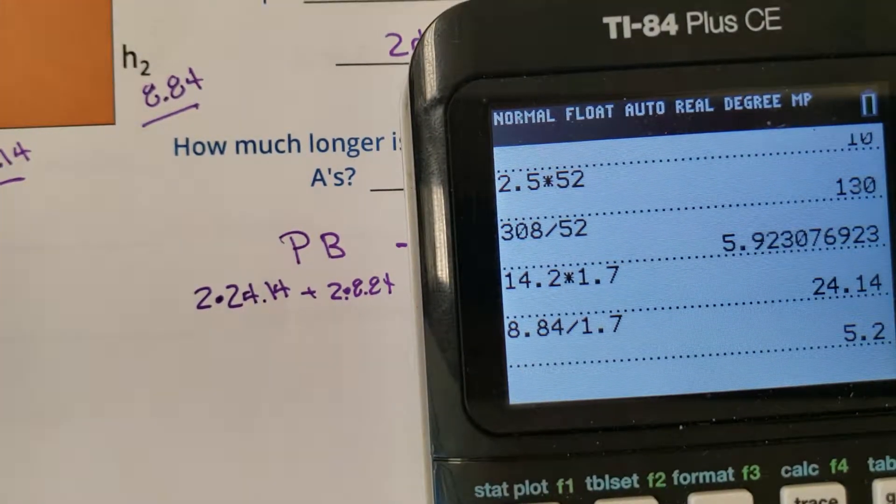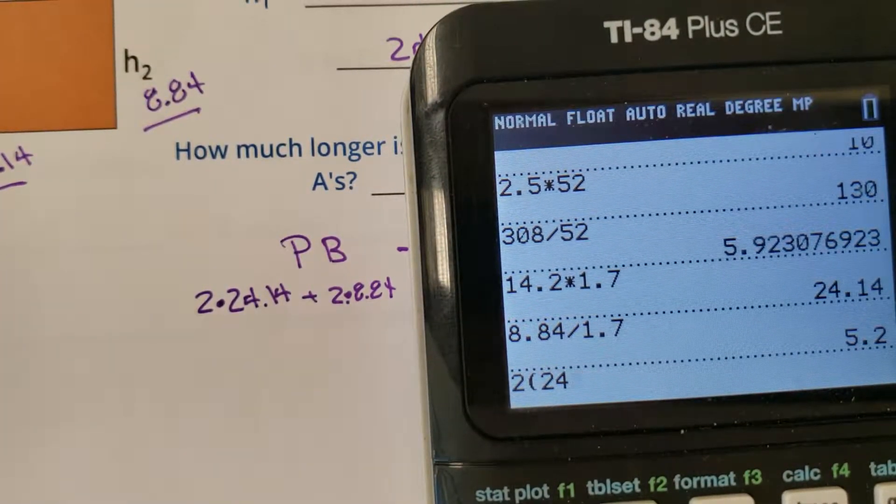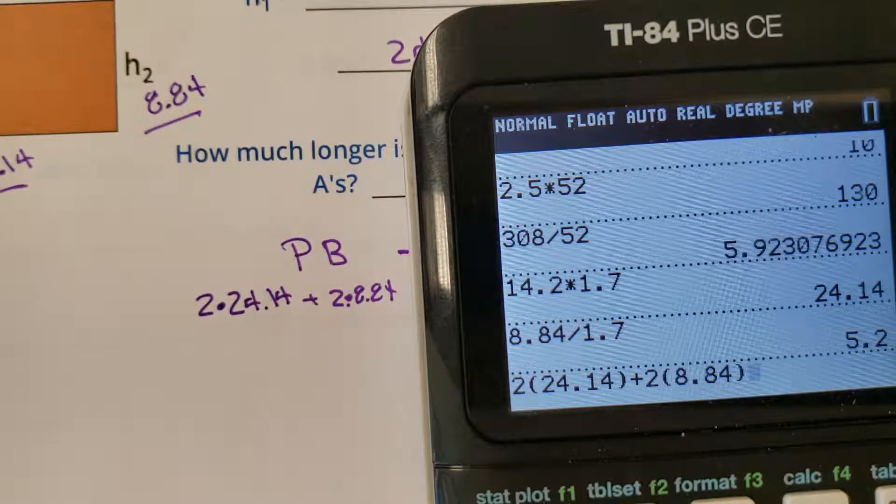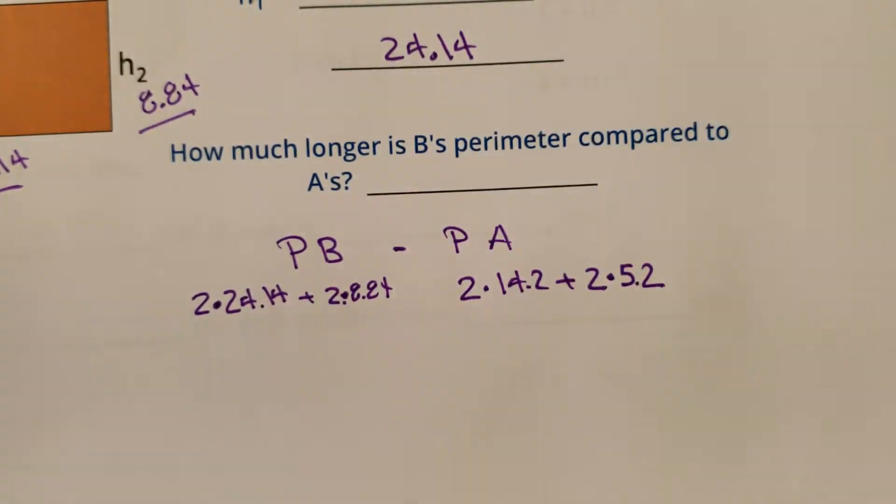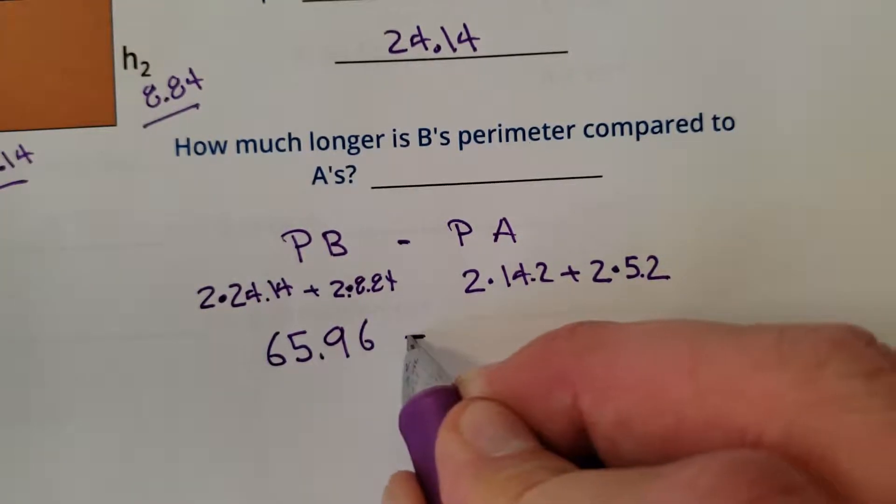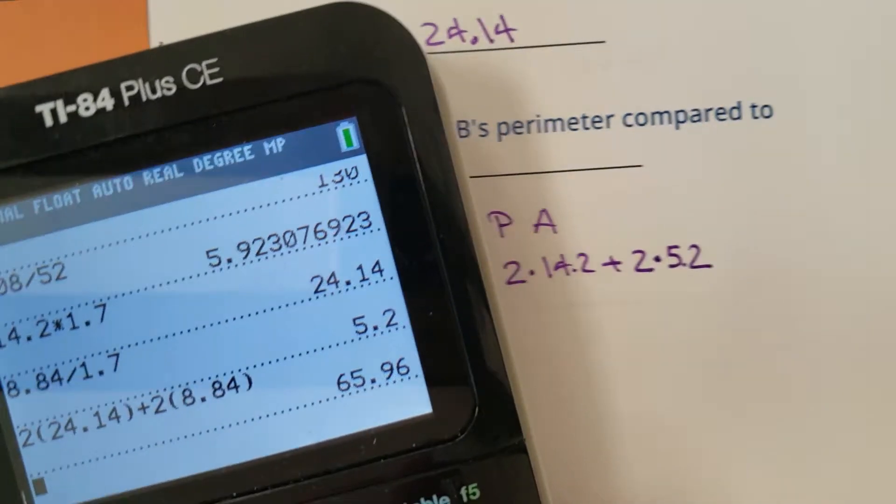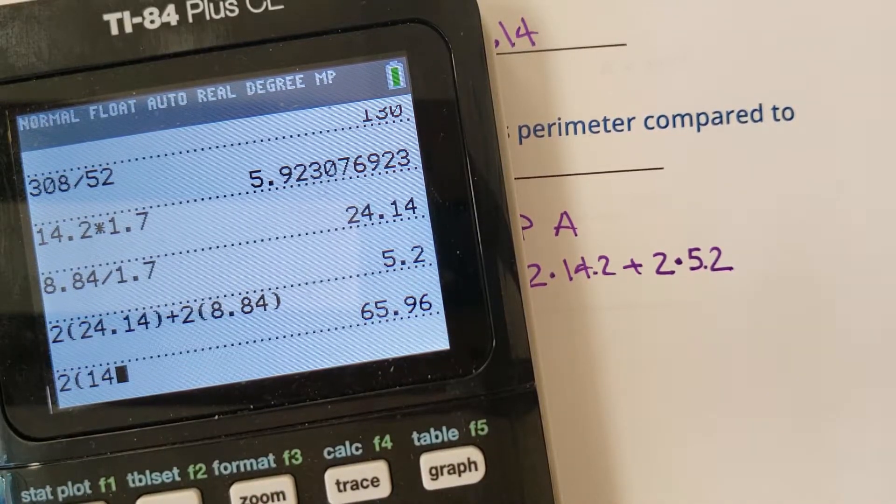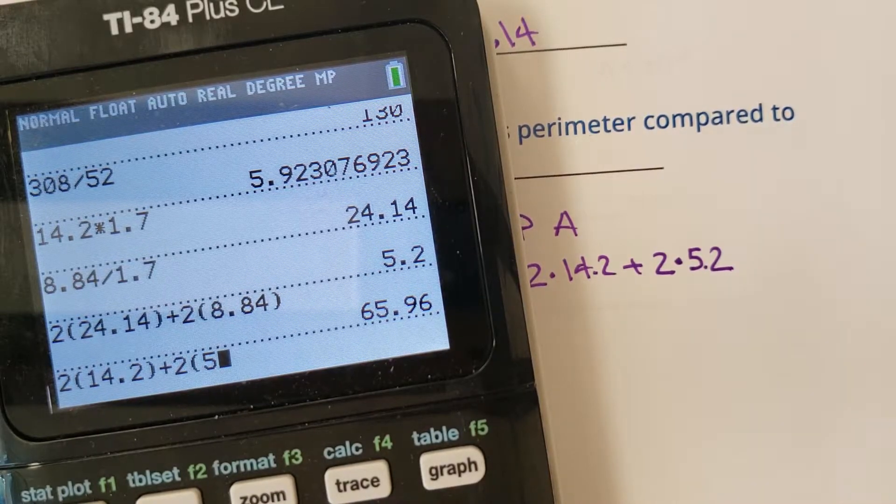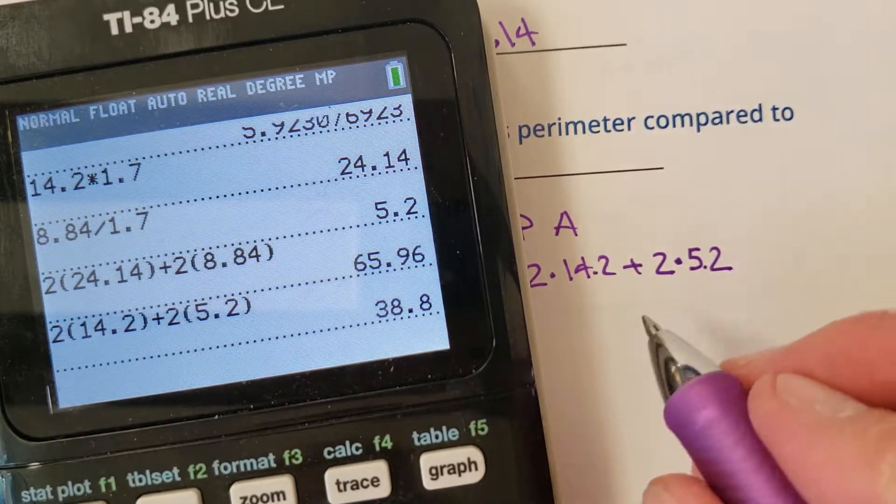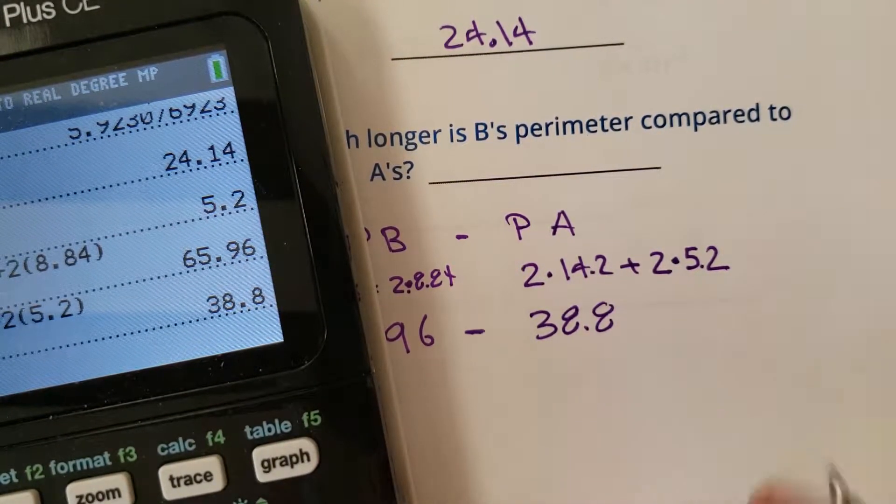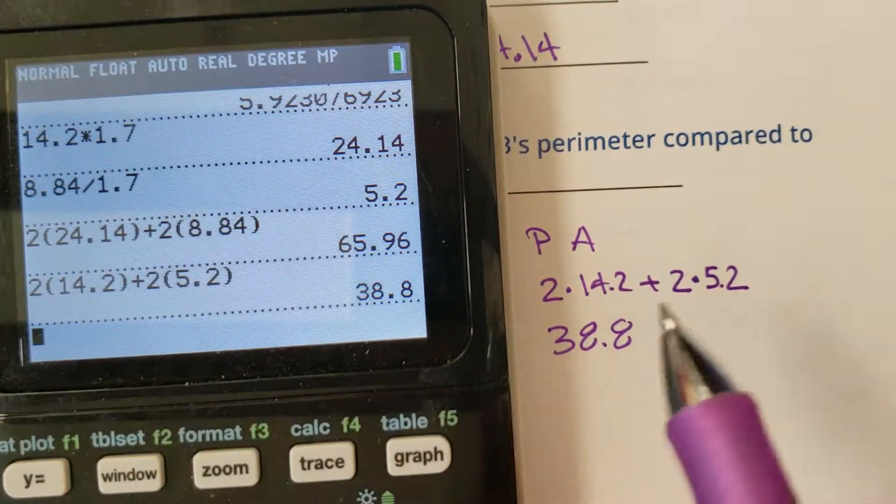Calculation time. Two times 24... oops, 25 plus two times 8.84. Two of those two of those is going to be 65.96 minus two times 14.2. Whoa. Where are you going, bro? Plus two times 5.2 equals 38.8. I think I did okay so far. Let me see. I feel like I did something wrong.